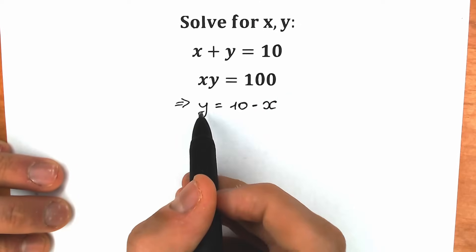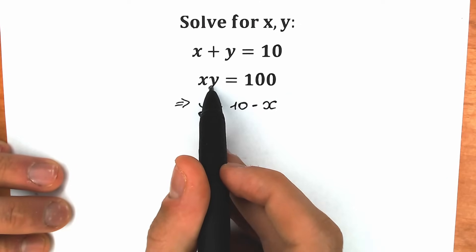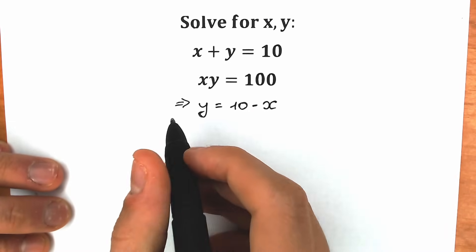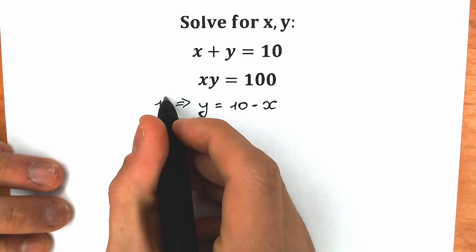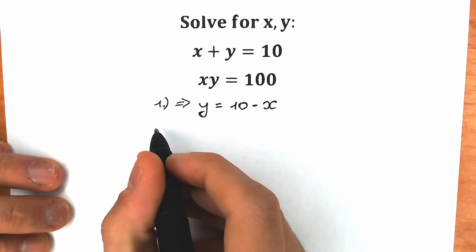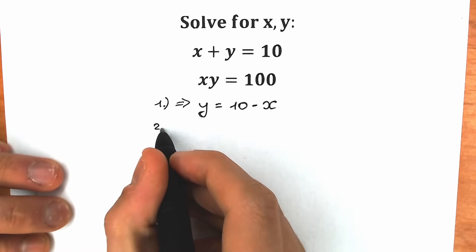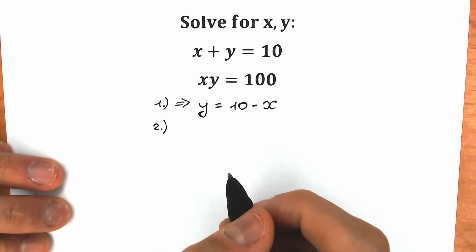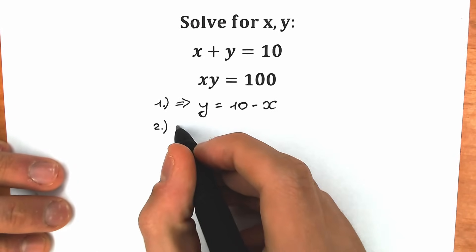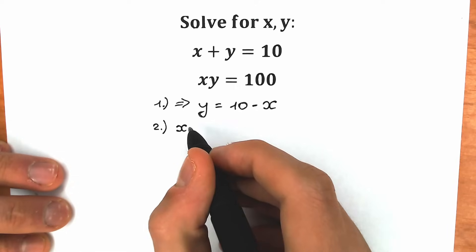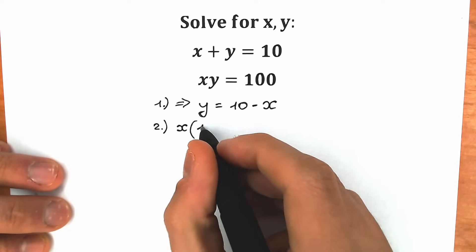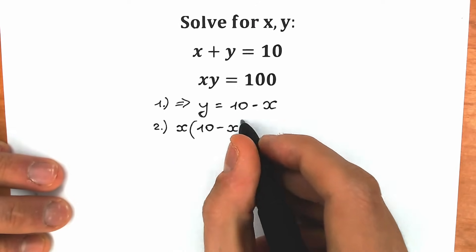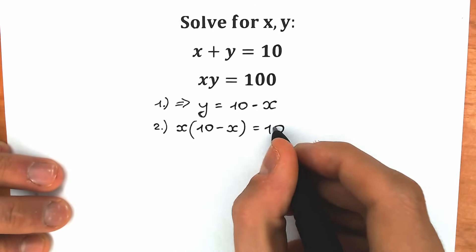Now let's plug this y into the second equation — we substitute 10 minus x for y. So from the second equation we get x times (10 minus x) equals 100.